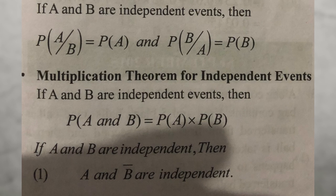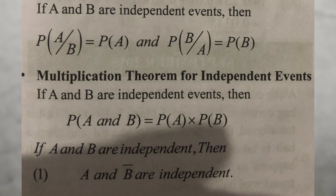If A and B are independent events, then P of A given B is equal to P of A, and P of B given A is equal to P of B. For independent events, the multiplication rule gives P of A and B equal to P of A multiplied by P of B.